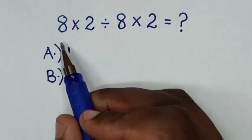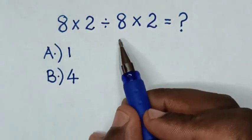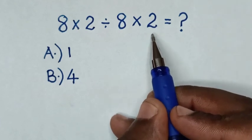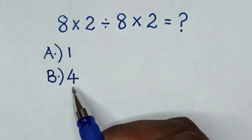Hello! How to solve 8 times 2 divided by 8 times 2? By selecting between the answers in A, 1, or B, 4.